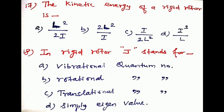Question number eighteen: in rigid rotor, j stands for dash. The formula of the rigid rotor is B·J(J+1). Options: a) vibrational quantum number, b) rotational quantum number, c) translational quantum number, d) simply an eigenvalue. J in the rigid rotor formula stands for the rotational quantum number, so option b is the correct answer.